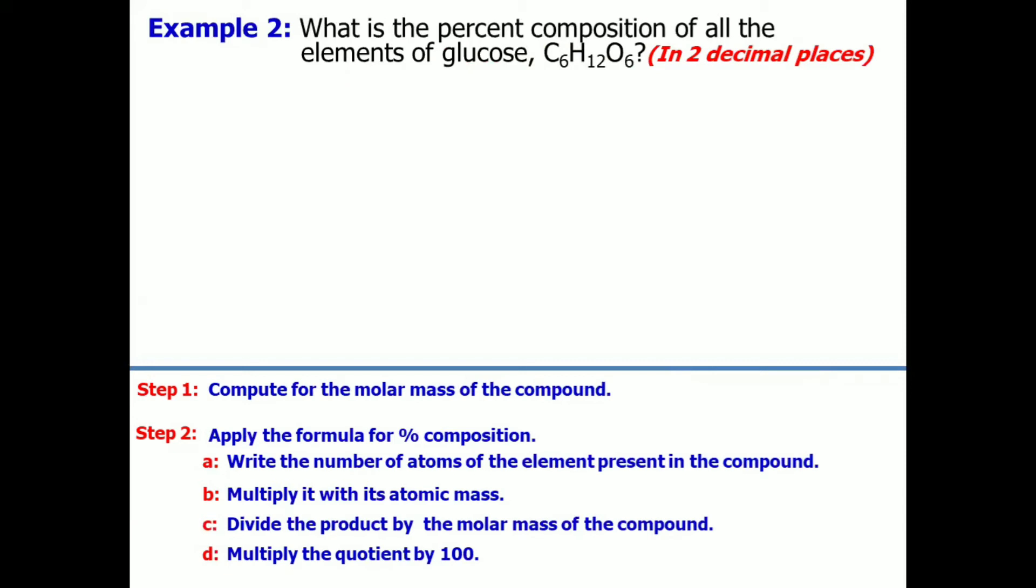So, again, step number 1. Compute for the molar mass of the compound. So, we will list down the number of atoms and multiply it with their respective atomic masses. For carbon, hydrogen, and oxygen. Then, add them up to get the molar mass of glucose. So, the molar mass of glucose is 180.18.